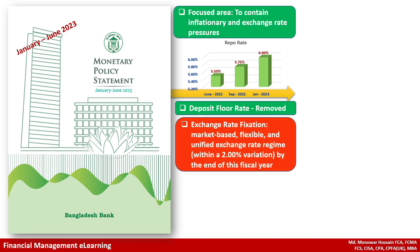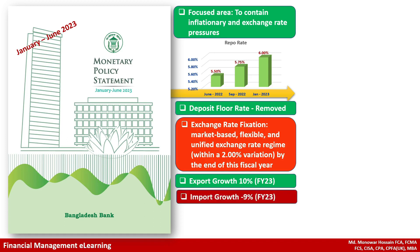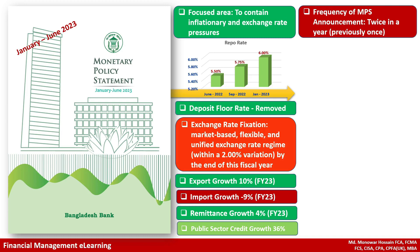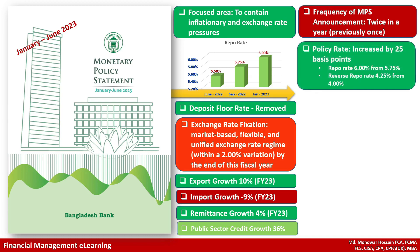By the end of this fiscal year: export growth is positive 10 percent, import growth is negative 9 percent, and remittance growth is positive 4 percent. Public sector credit growth estimate is 36 percent. The frequency of Monetary Policy Statement announcements is twice a year. The policy rate was increased by 25 basis points, with the repo rate at 6 percent from 5.75 percent.